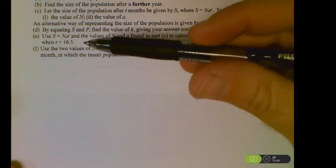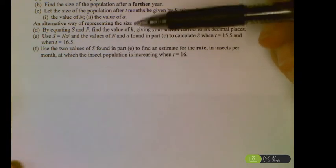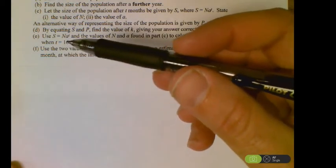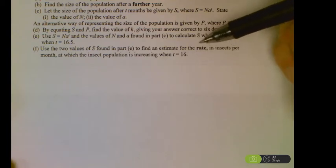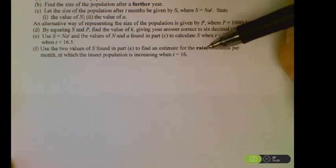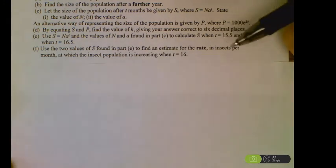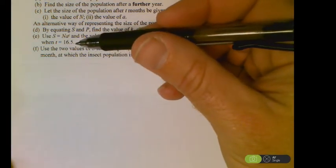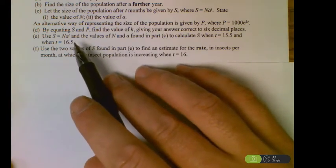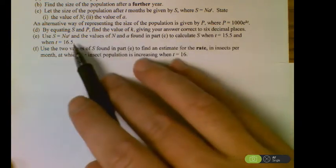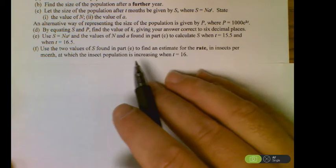Last part of this question, part F. Use those two values we just got for part E to get an estimate for the rate in insects per month. Even though they told us it was 6% per month, we are getting a rate solely based on those two responses to calculate our own rate of change. Remember rate of change, that's like finding a slope. Rate of change is y minus y over x minus x, just like finding a slope or gradient. Later we'll be doing derivatives to deal with rates of change. These would be the two x's, the 15.5 and 16.5. Their results would be the two y values. Take your two answers on part E and do this answer minus this answer over 16.5 minus 15.5.